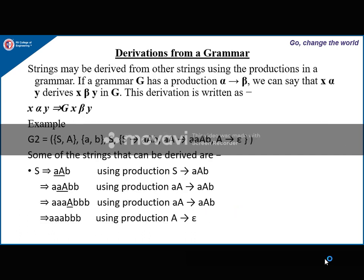Coming to derivation from a grammar: strings may be derived from other strings using the productions in the grammar. If a grammar has a production alpha derives beta, we can say that x alpha y derives x beta y if alpha derives beta under the grammar G.